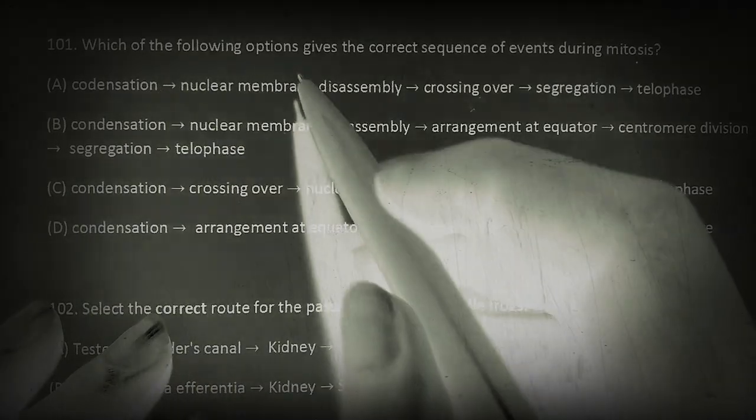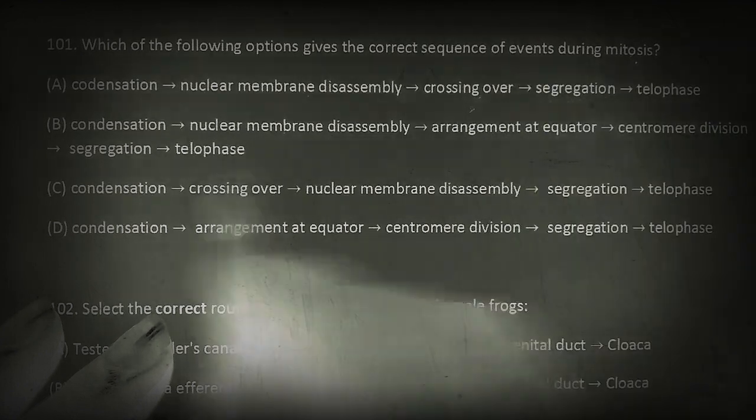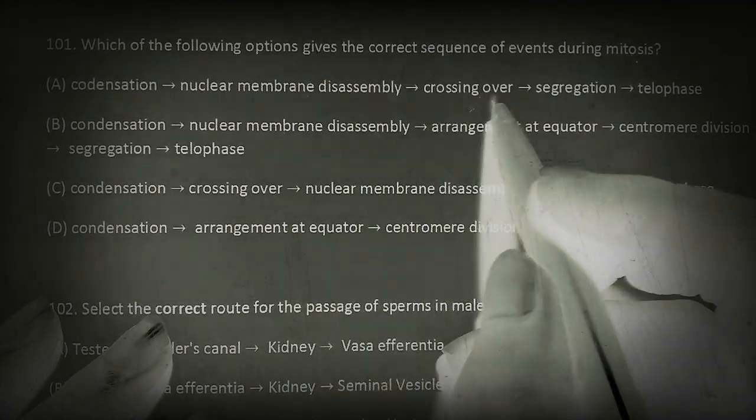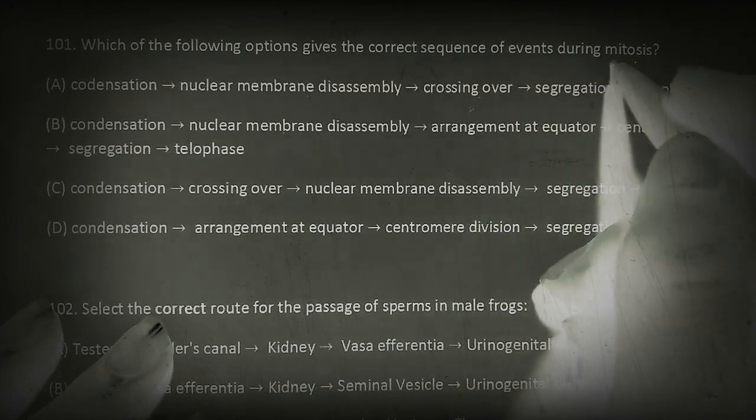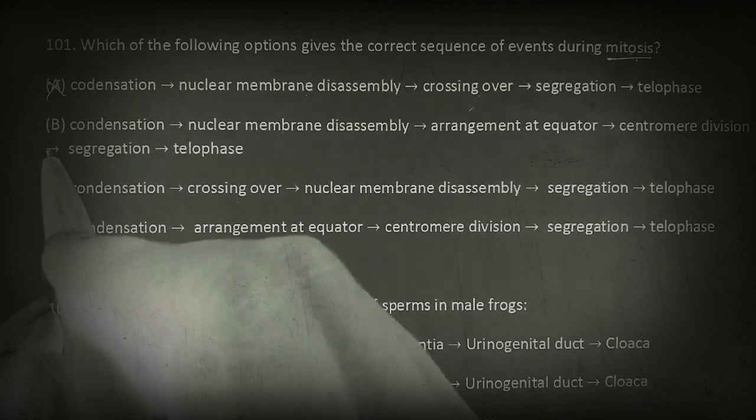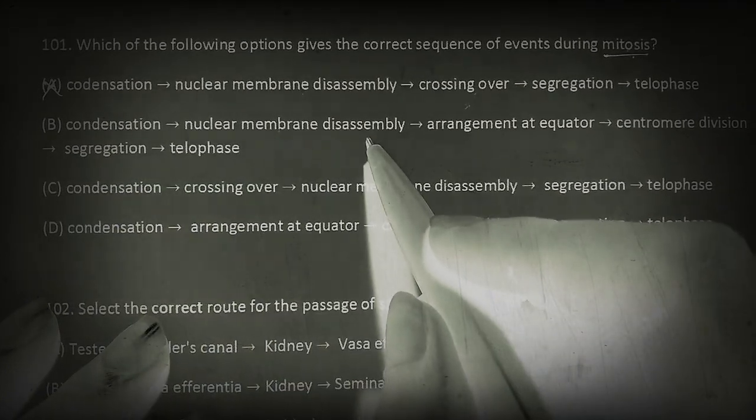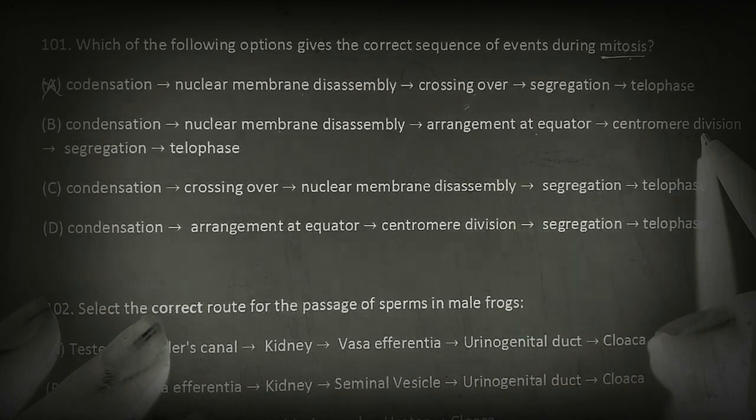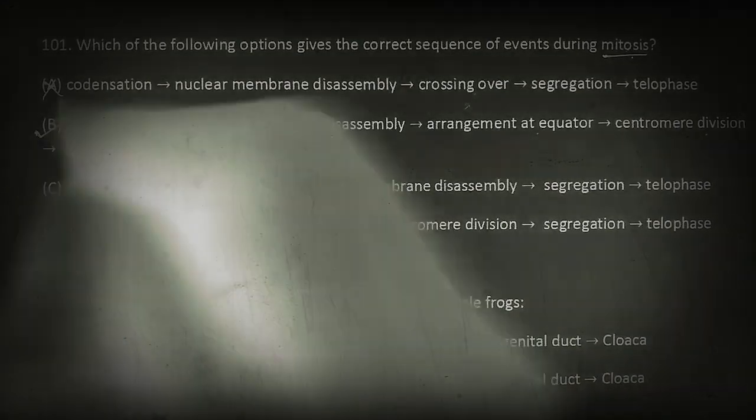Which of the following options gives the correct sequence of events during mitosis? First, condensation, nuclear membrane disassembly, crossing over. So crossing over is the event of prophase I of meiosis I, and we have to answer according to mitosis, so this is the wrong option. Now move on to option B: Condensation, then nuclear membrane disassembly, then arrangement at equator, that is metaphase, then centromere division, that is anaphase, segregation, then telophase. So option B is the correct choice.